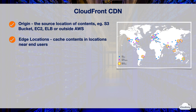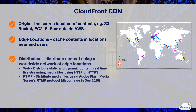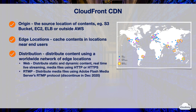Edge locations are separate from AWS regions and availability zones. There are more edge locations than regions and AZs. A distribution allows you to distribute content using a worldwide network of edge locations that provide low latency and high data transfer speeds. When we distribute content with CloudFront, we need to configure the distribution and tell CloudFront information such as delivery method, origin, time to live, and security.